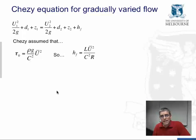And this means that the energy loss over that length L is equal to this equation, the distance L multiplied by the velocity squared, divided by the product of Chezy's coefficient squared times R.